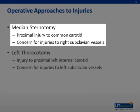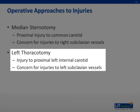Should there be any concern for very proximal injury to vascular structures, a median sternotomy may be indicated. In this case, the sternum is divided, usually in a controlled operating room setting. This allows access to proximal injuries to the common carotid or any concern of injuries to the right subclavian vessels. Should there be any concern involving the left internal carotid or left subclavian vessels, a left thoracotomy is performed, again usually in the operating room.